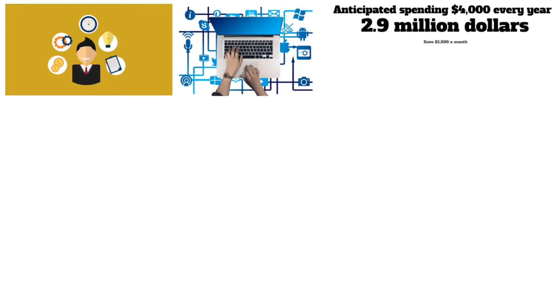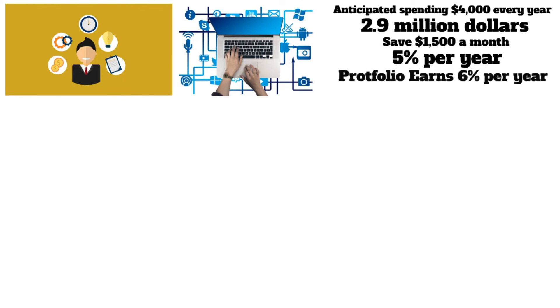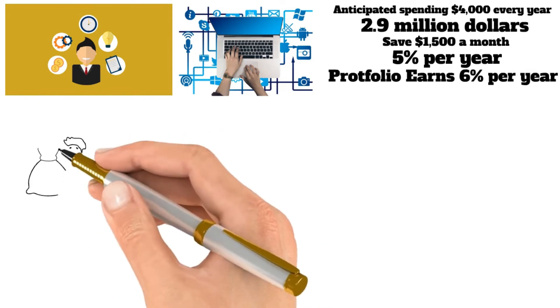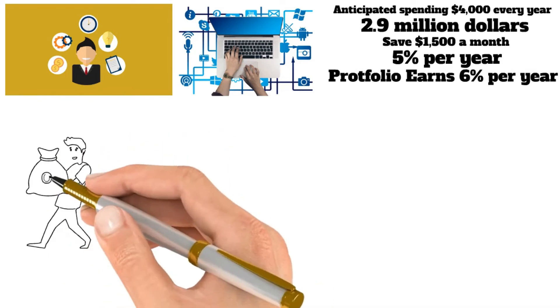For example, if you anticipated spending $4,000 every year until retirement, you would need around $2.9 million. That implies you should start saving $1,500 a month as soon as you finish reading this. If you stick to that plan, save at a rate of 5% per year, and make sure that your portfolio earns a return of 6% per year, you will be able to retire in style.